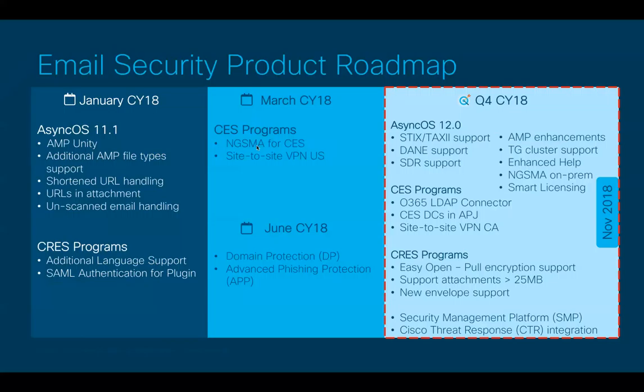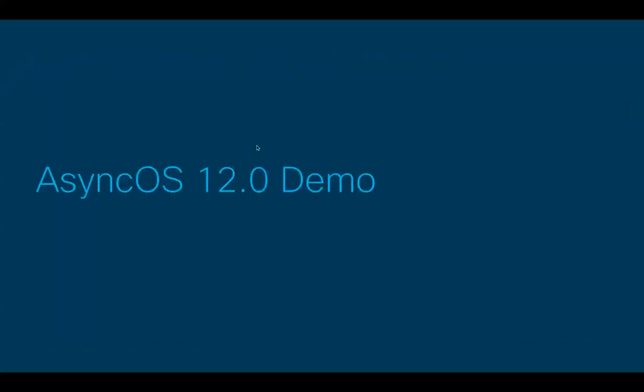For the CES program, we have LDAP connectors for customers that have Active Directory set up on the Azure platform, allowing you to configure LDAP connections back to your Azure AD. We now have two data centers available in APJC, and we'll start rolling out site-to-site VPN service to all data centers as well. For the CRES encryption program, we've included pull encryption support, support for a bigger attachment size, and mobile platform envelope enhancements. We also have two more releases: the CSMP — Cisco Secure Management Platform — and CTR, Cisco Threat Response integration with the SMA.